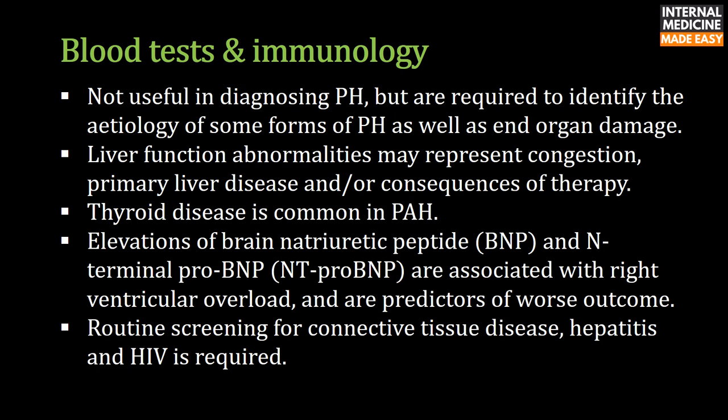Blood tests and immunology are not useful in diagnosing pulmonary hypertension, but are required to identify the etiology and assess end organ damage. Liver function abnormalities may represent congestion or primary liver disease. Thyroid disease is common in PAH. Elevations of BNP and NT-proBNP are associated with right ventricular overload and predict worse outcome. Routine screening for connective tissue disease, hepatitis, and HIV is required.